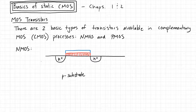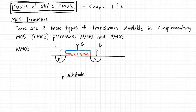We call this terminal the gate of the transistor, this terminal is the source, and this terminal is the drain — that is a basic NMOS transistor. Typically this gate material is polysilicon in older processes; in more modern processes it's now some form of metal.